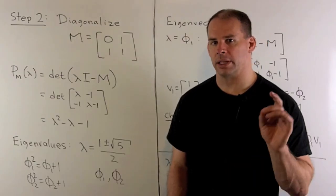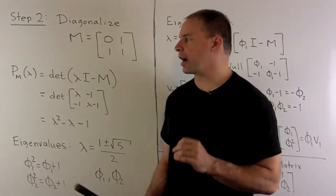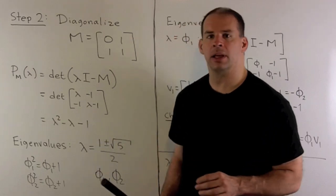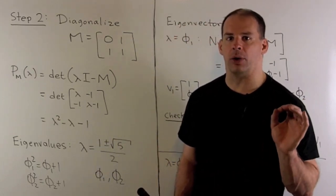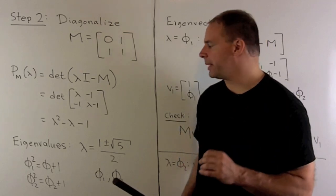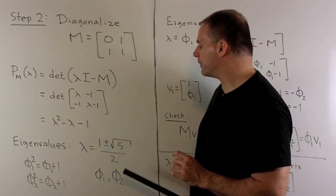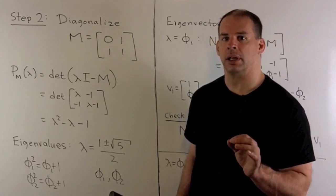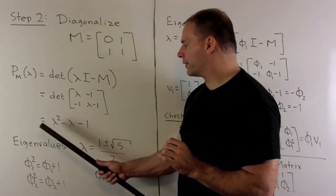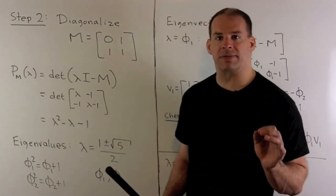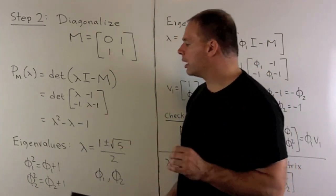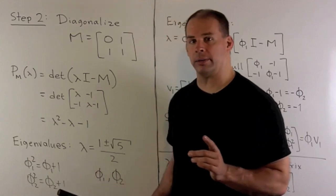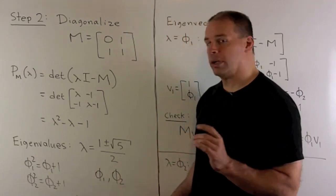Step 2: let's diagonalize our matrix. We start by computing the characteristic polynomial, which gives us lambda squared minus lambda minus 1. The eigenvalues are the zeros of this polynomial, so applying the quadratic formula we get lambda equals (1 plus or minus square root of 5) over 2. And we see exactly where phi1 and phi2 come into the picture. Since phi1 is a root, phi1 squared minus phi1 minus 1 equals 0, or equivalently phi1 squared equals phi1 plus 1. A similar formula holds for phi2.